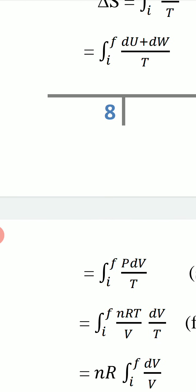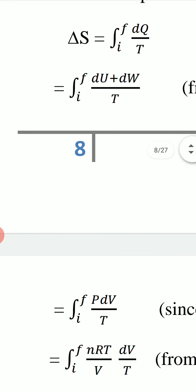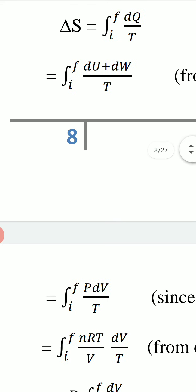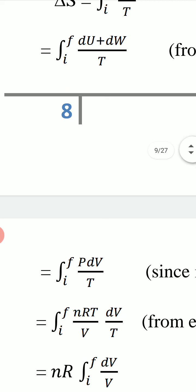This is an isothermal process so temperature remains constant, meaning internal energy U also remains constant and dU = 0. Substituting dU = 0 and dW = p dV, the change in entropy becomes ΔS = ∫p dV / T, integrated from i to f.